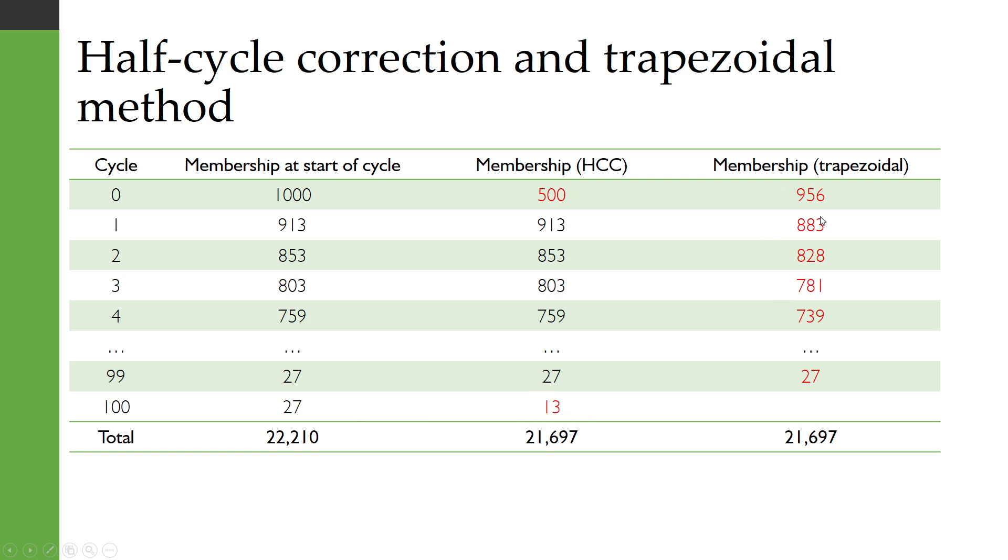With the trapezoidal method each one of these is different from our initially calculated membership but they add up to the same at the bottom, the half cycle correction and the trapezoidal method.